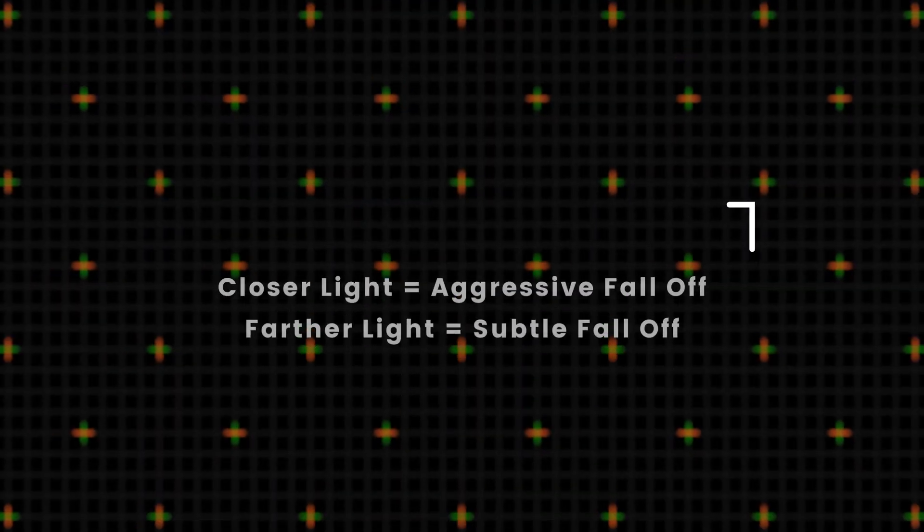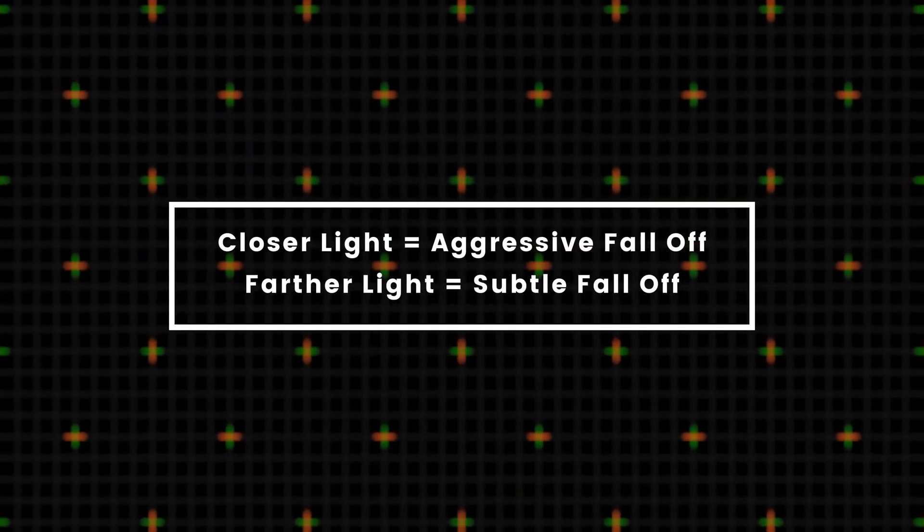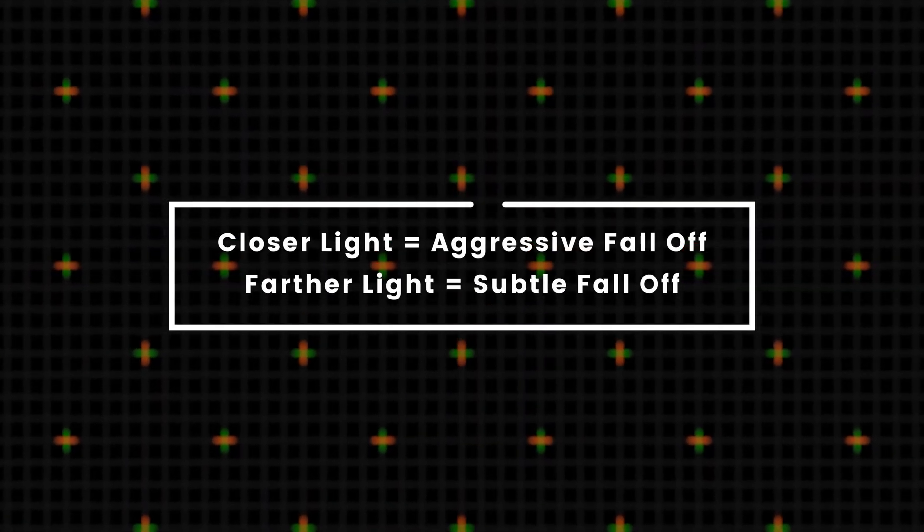With that all said and done, no one is expecting you to show up on set with a measuring tape and a calculator and start blasting through equations. The simple key takeaway is: the closer the light, the more aggressive the falloff, and the further the light, the more subtle the falloff. Just keep that in mind going forward and enjoy having that next level of control over your lighting.